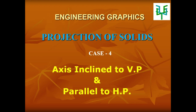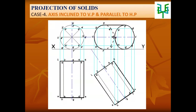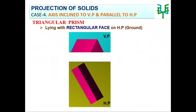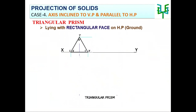In this video, we are going to discuss projection of solids with the condition axis inclined to VP and parallel to HP. When a solid is resting with its axis inclined to any one of the planes, the projections — that means the elevation and plan of the solid — can only be drawn in two stages. Since the axis is inclined to VP, initially we have to assume that the axis of the solid is perpendicular to VP. Projection of the solid with its axis perpendicular to VP and parallel to HP must be drawn as the first stage. This condition we have already discussed in the previous video.